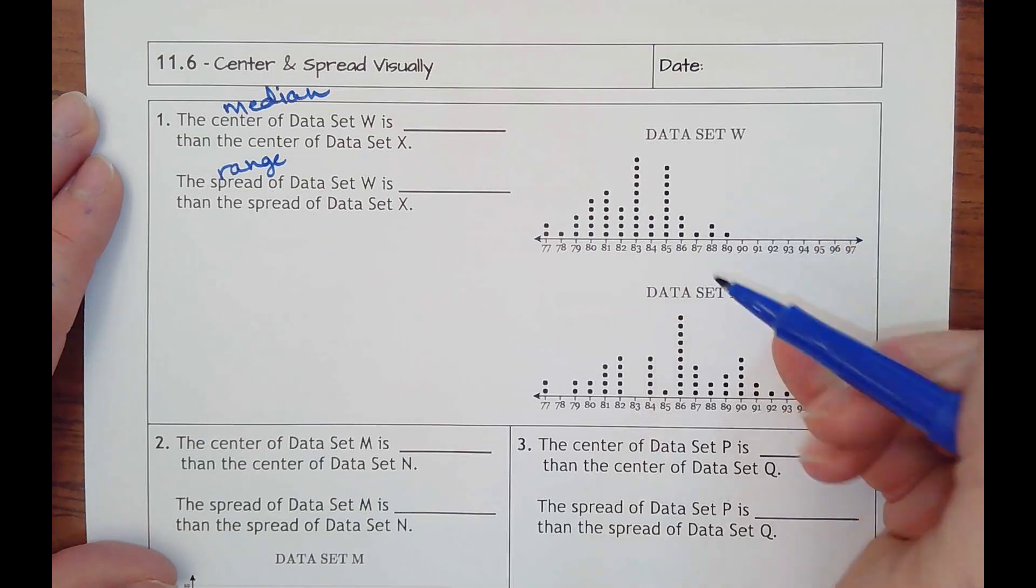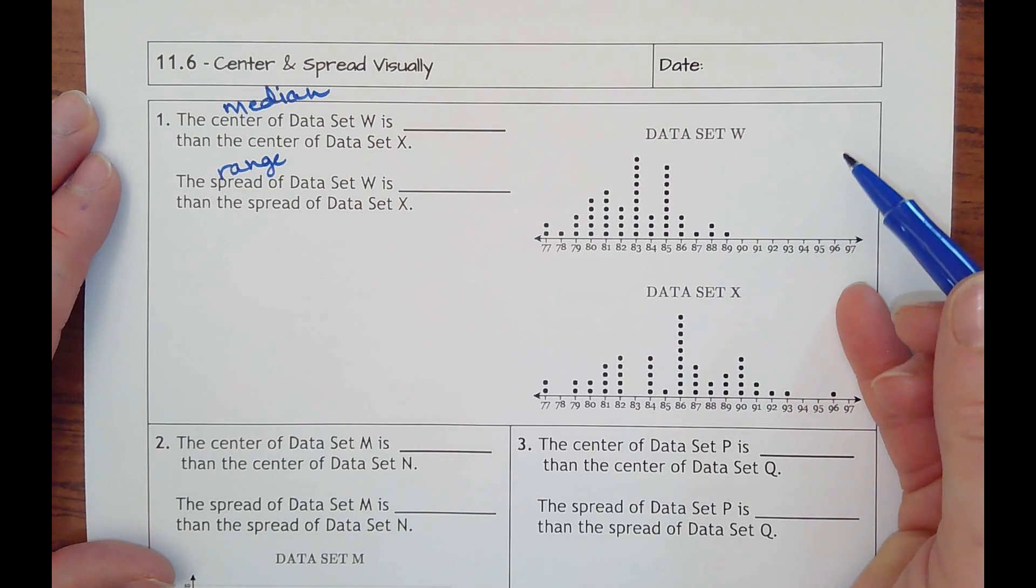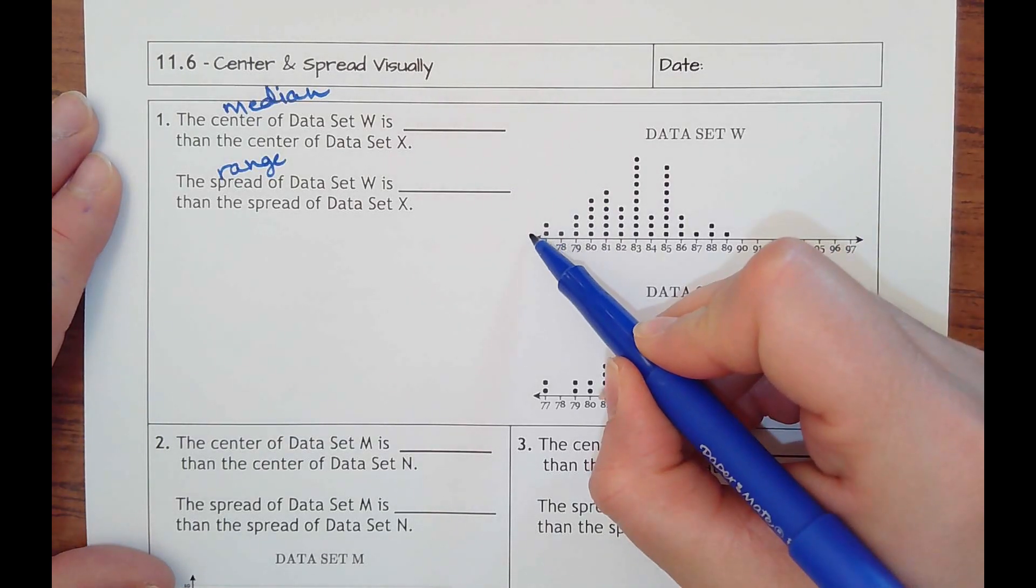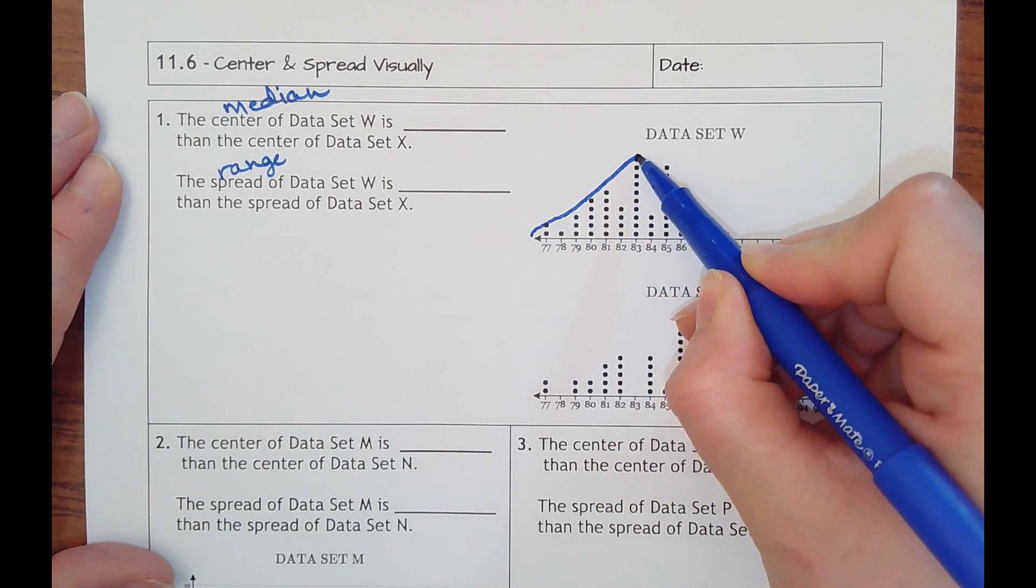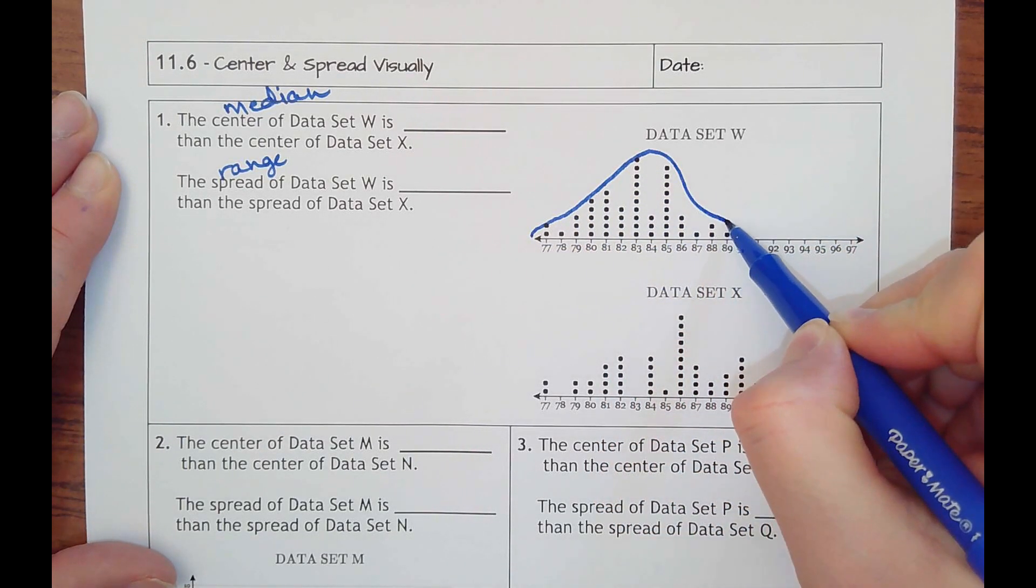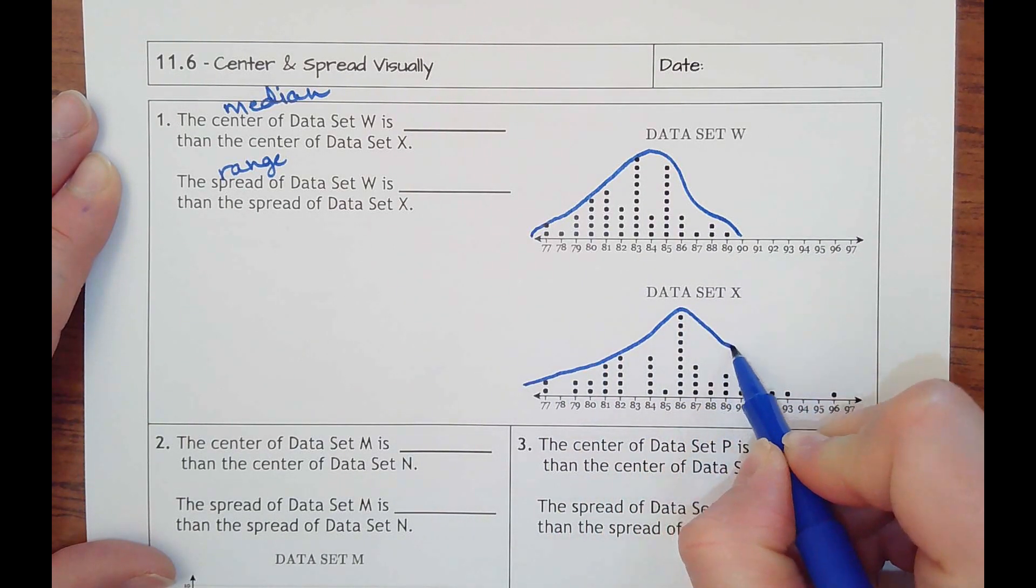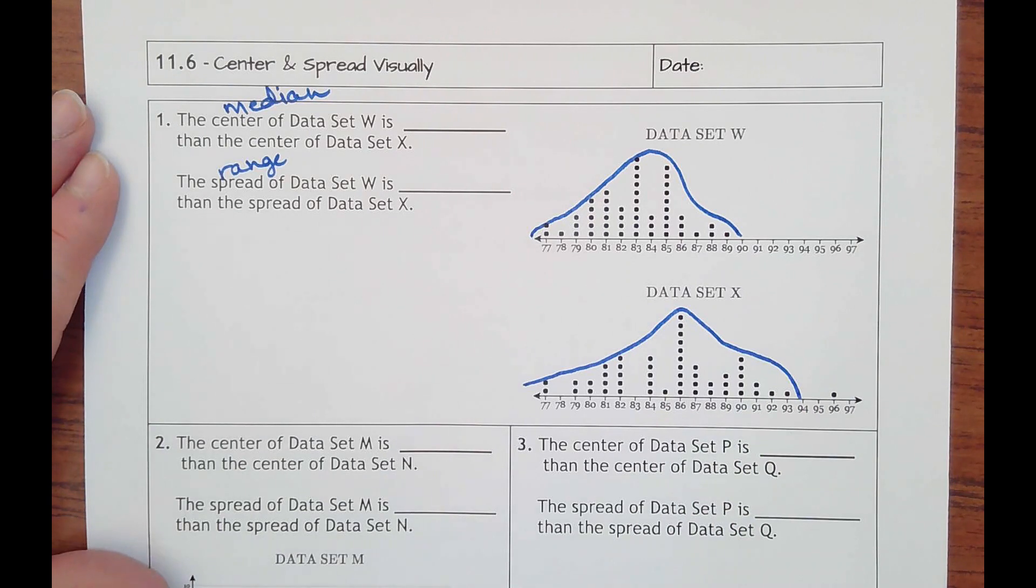And so we've got data set W and data set X. We're comparing the center of W to X. What I want you to think about is making a bell curve in statistics class. It goes over the data because everything always makes a bell curve.